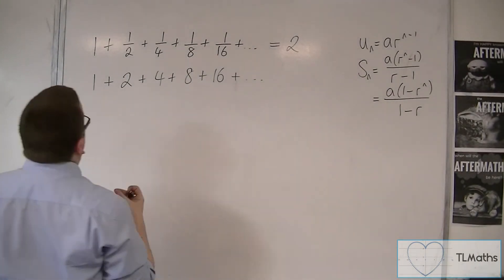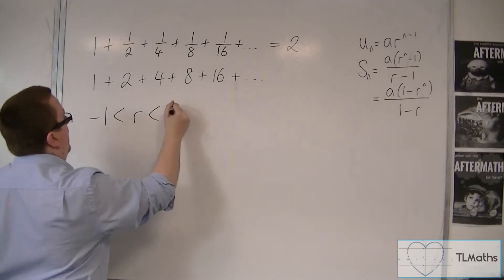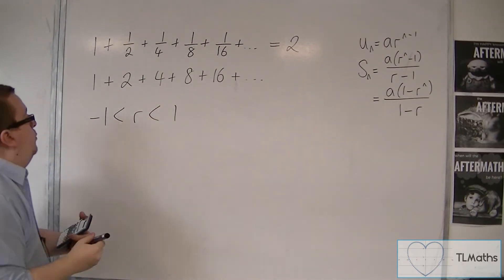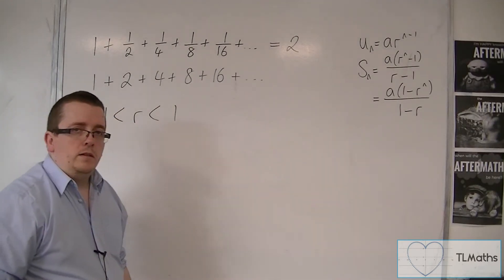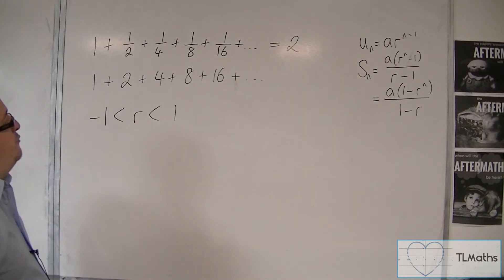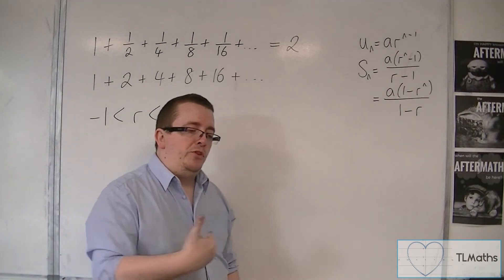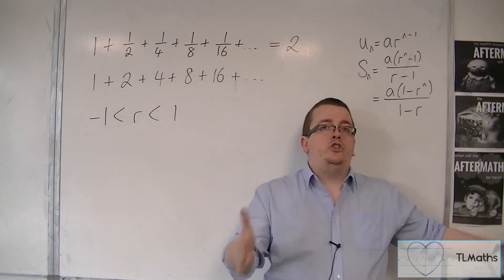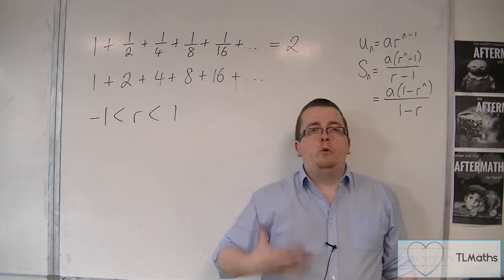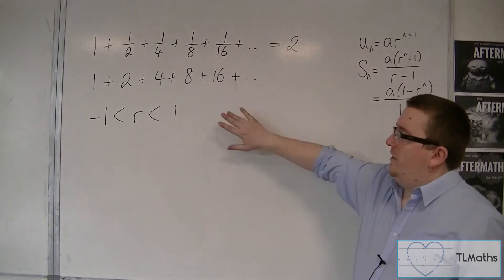In order for this to work, the value of r must be between minus 1 and 1. If it is 1, then the sequence stays static. So it remains exactly the same for each term. It's a constant sequence. If r is greater than 1, then the numbers, the gaps between the numbers, increase each time. And so the data points get further and further apart each time you go along in the series. And so adding them all together, you can't really do. It would just be infinity. So that is our restriction.